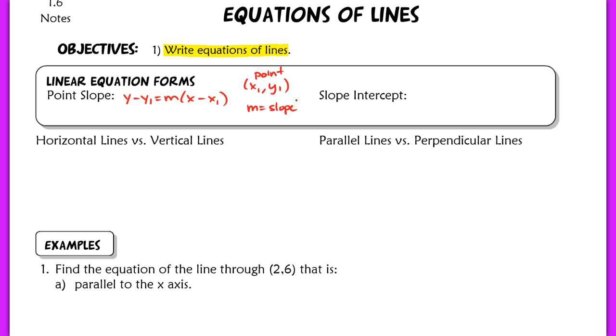Now slope-intercept form is a little bit different. We have y equals mx plus b. We still have m as our slope, but b is now our y-intercept.